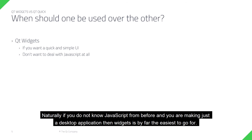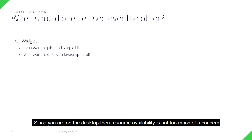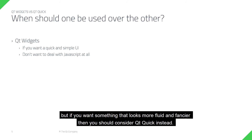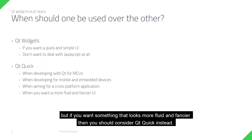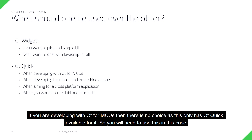Naturally, if you do not know JavaScript and you are making just a desktop application, then widgets is by far the easiest to go for. Since you are on the desktop, resource availability is not too much of a concern, but if you want something that looks more fluid and fancier, then you should consider using Qt Quick instead. If you are developing with Qt for MCUs, then there is no choice as this only has Qt Quick available for it, so you will need to use this in that case.